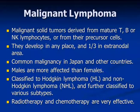But before that, let me explain what is malignant lymphoma. They are malignant solid tumors derived from mature T, B, or NK cells or from their precursor cells. They develop in any place, and one-third develop in extranodal areas. They are a common malignancy found in Japan and other countries. Males are more affected than females. They are classified into Hodgkin lymphoma and non-Hodgkin lymphoma, and further classified into various subtypes. Radiotherapy and chemotherapy are very effective.